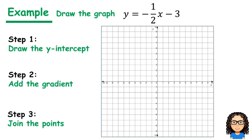So we've got this graph here, y equals negative half x take away 3. So there's three steps. The first step is to draw the y-intercept.